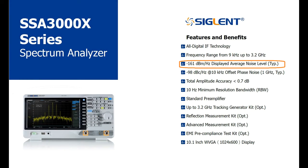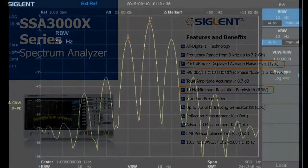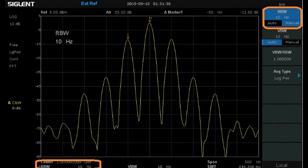The SSA 3000X also features a 10Hz minimum resolution bandwidth setting. This provides a lower noise floor and better frequency resolution when compared to the minimum resolution bandwidth of 100Hz found on similar analyzers. Basically the lower the resolution bandwidth the closer you can discern between two signals that are close together and it has the added effect of lowering the DANL or noise floor.